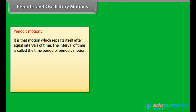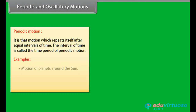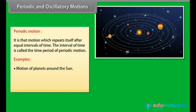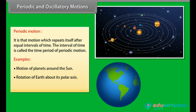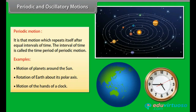Periodic motion is that motion which repeats itself after equal intervals of time. The interval of time is called the time period of periodic motion. Some examples are: motions of planets around the sun, rotation of Earth about its polar axis, and motion of the hands of a clock.